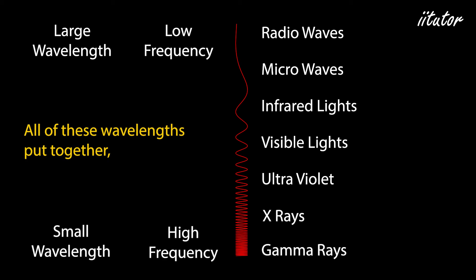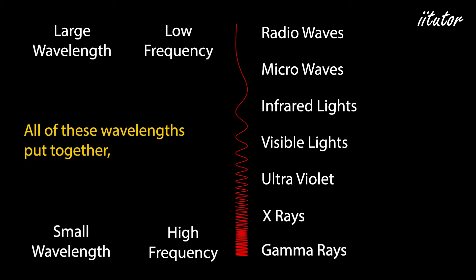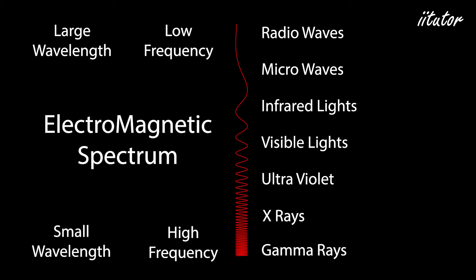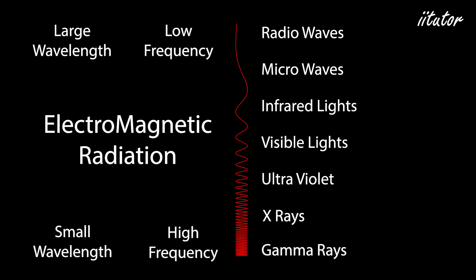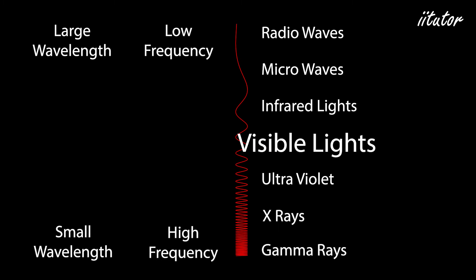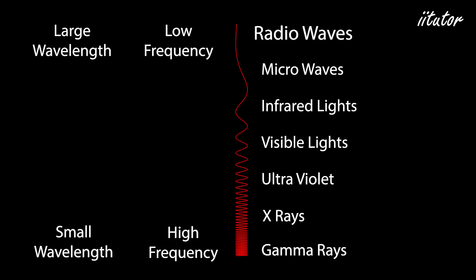All of these wavelengths put together are called the electromagnetic spectrum. The spectrum consists of all the different sorts of waves. We can call them electromagnetic waves, electromagnetic radiation, or by their individual parts of the spectrum — whether visible light, x-rays, gamma rays, infrared, radio waves, or whatever.